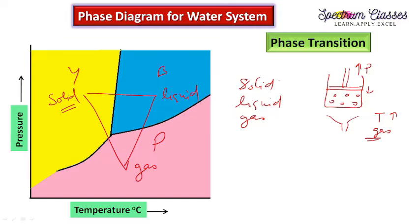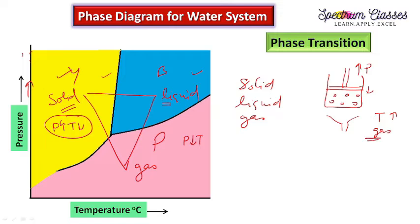At high pressure conditions, the liquid or solid phase will be more stable. So the solid phase is dominant at low temperature and high pressure. High pressure and high temperature gives the liquid phase, whereas low pressure and high temperature gives the gas phase. This is the basic concept behind the phase diagram.